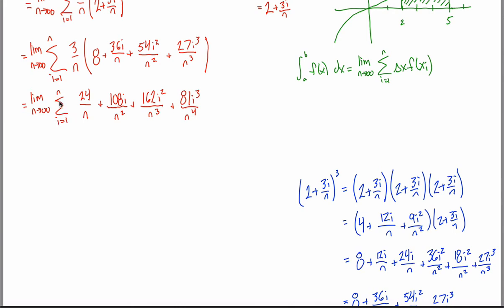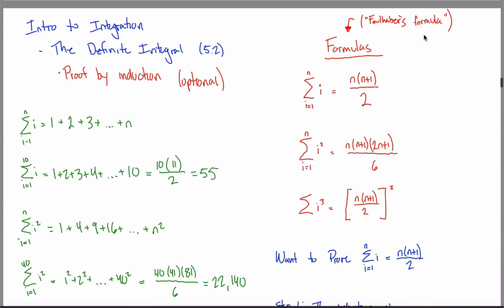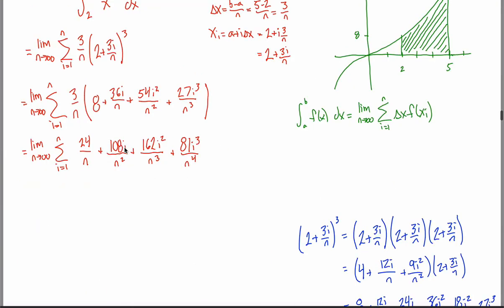Now all we have to do is evaluate this limit. Evaluating limits when you have sigmas in there is really, really hard — if only there was a way to get rid of the sigma. Good old Faulhaber to the rescue again. If I can write it as the sum of i, the sum of i squared, or the sum of i cubed, I have Faulhaber's formulas which allow me to get rid of sigmas. Getting rid of sigmas is your goal because once you do, you can evaluate the limits. Right now I don't have those individual sums — I have this huge mess — but I can see the i, the i², and the i³ hiding in there.